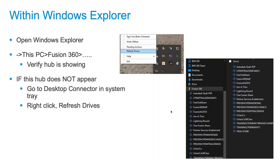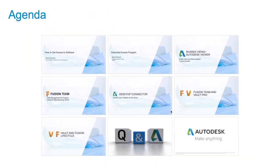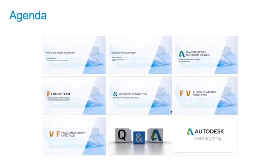If you've been using Box, Dropbox, or OneDrive, think of it like that — but so much better, because you get actual CAD relationship knowledge. So that's Desktop Connector and Fusion Team; those two go hand-in-hand. You might have access to it already. If not, please check out the Extended Use Program. Thank you.